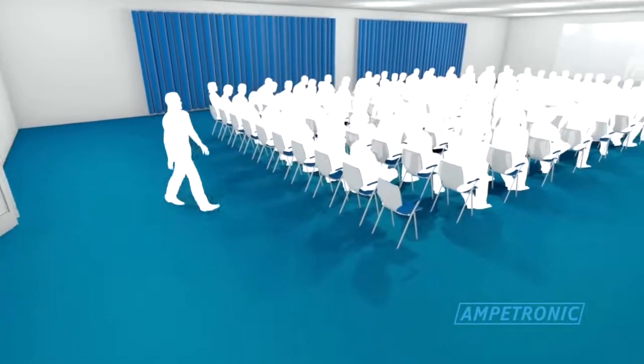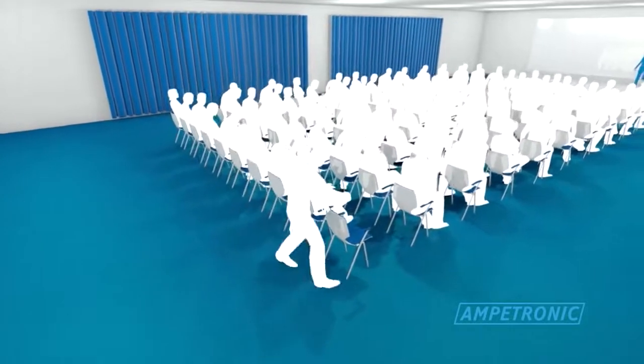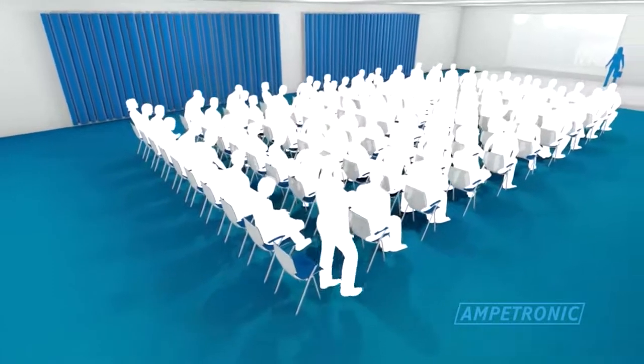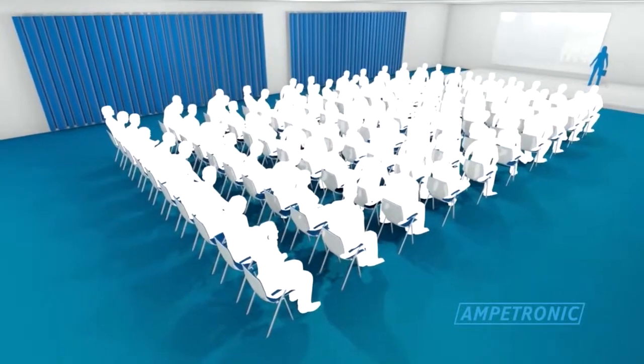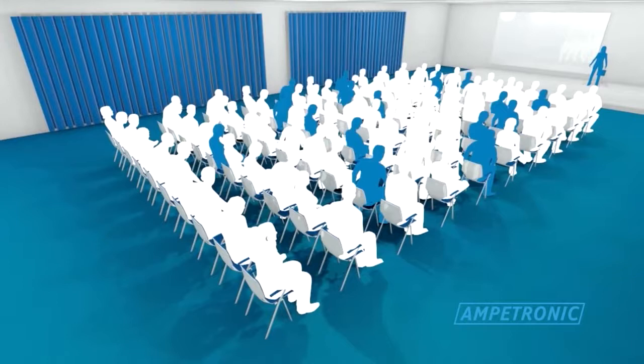A common place to encounter an area coverage loop facility is in a conference room. As many as one in every six people experience some degree of hearing loss, a number that represents a significant proportion of the population.